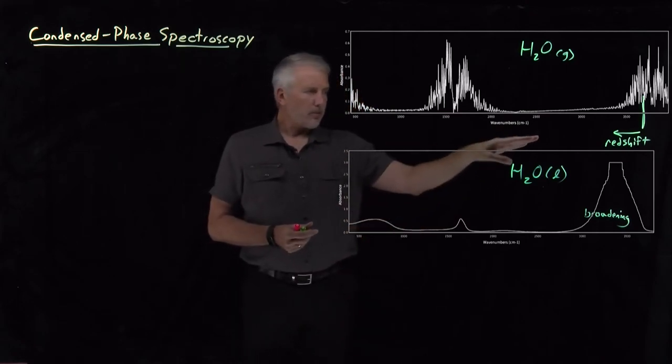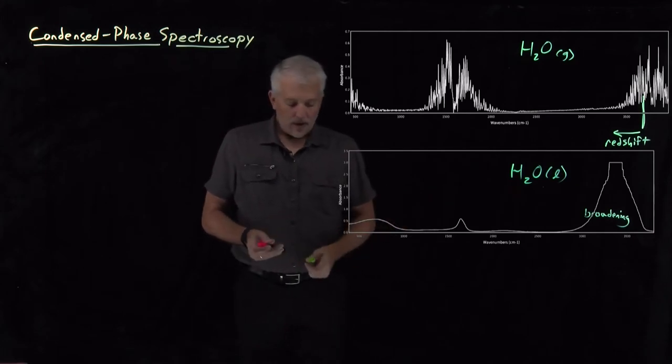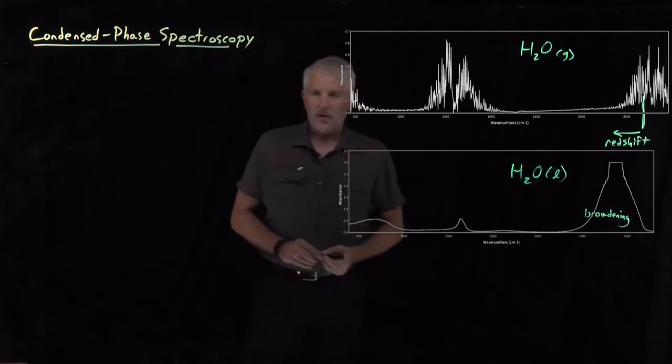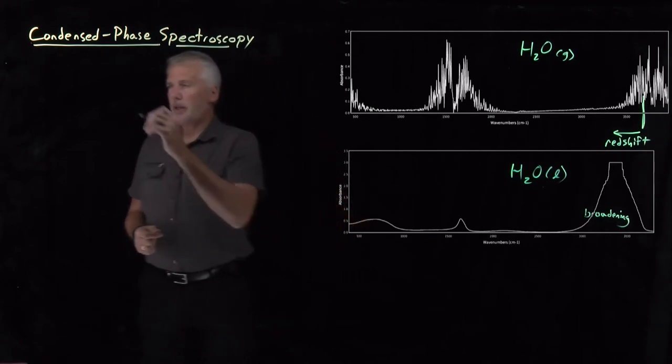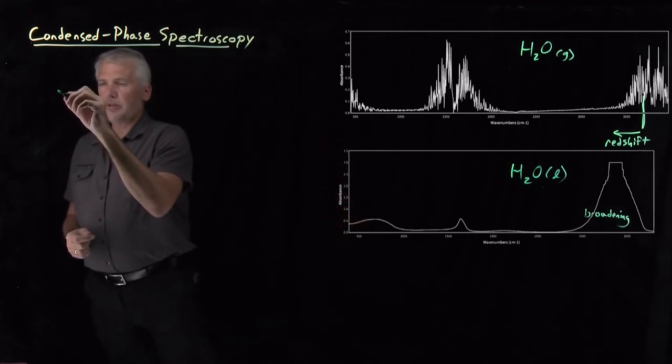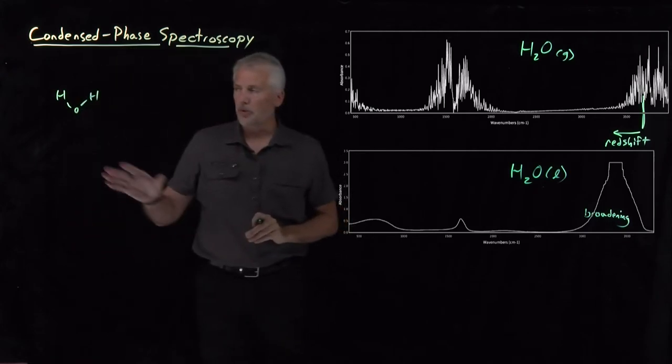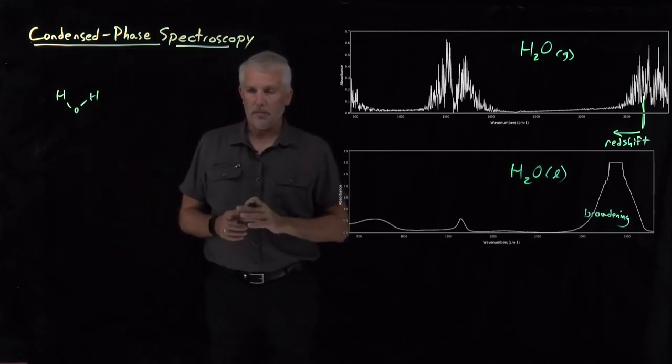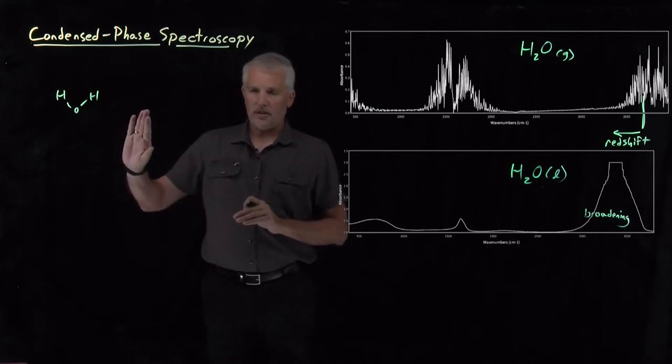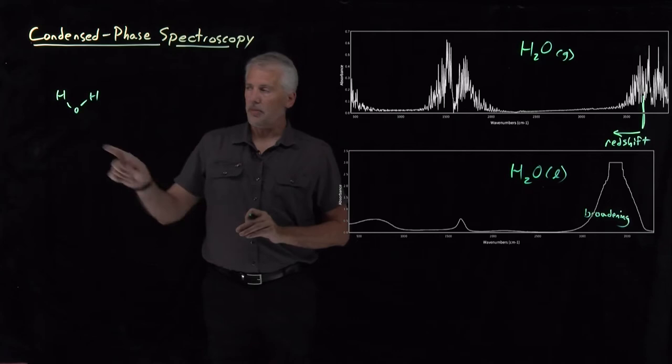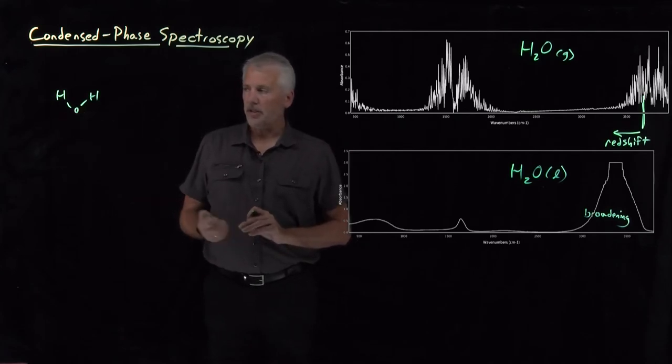So what's responsible for these two effects, this red shift effect and the broadening? We can explain both of those. Let's tackle the red shift first. If we think about the difference between a water molecule in the gas phase, there's a water molecule surrounded by vacuum. The nearest other molecule in the gas phase is many, many molecular diameters away. This molecule is surrounded by nothing other than empty space for a long distance, at least at the molecular scale.